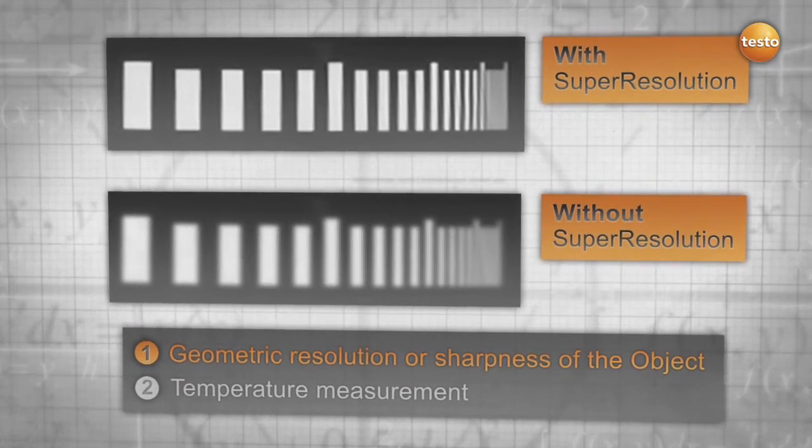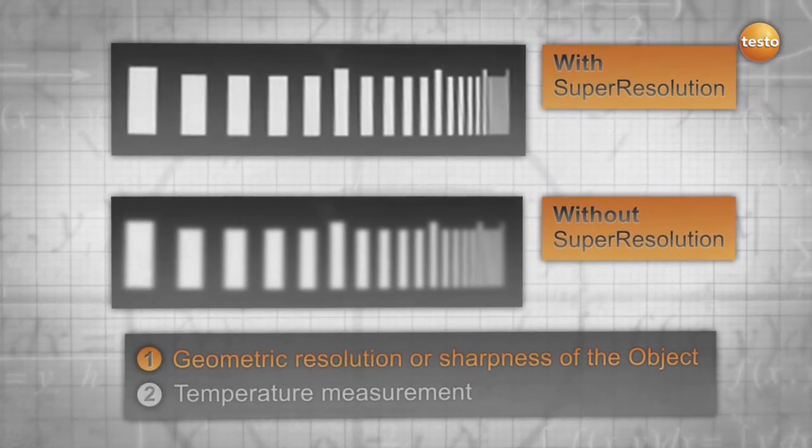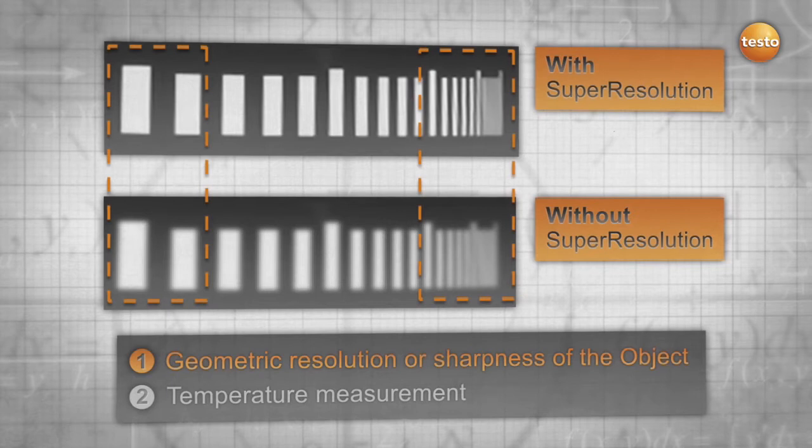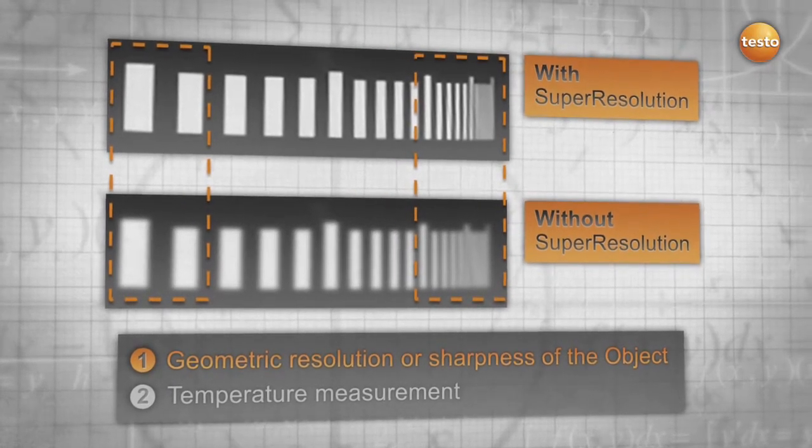The difference is clearly seen in this test: a gobo with vertical slots of different widths and distances is placed in front of a black body that has a certain temperature. Without Super Resolution, you get a blurry image. The smaller and denser the slots, the more blurry the image.